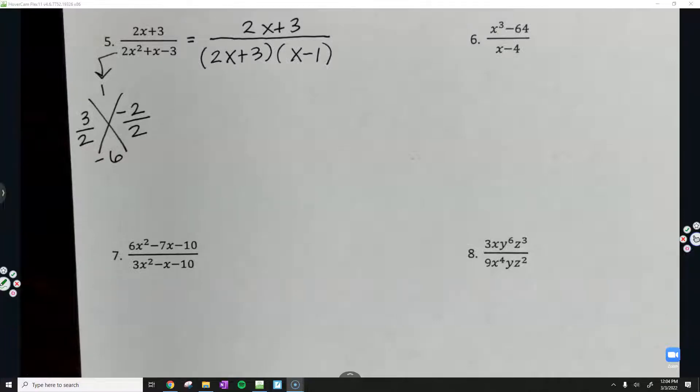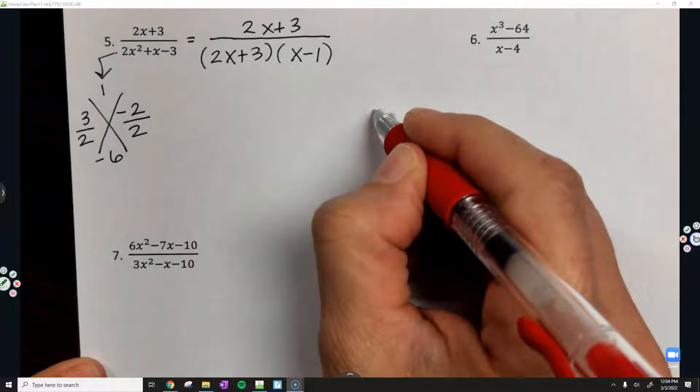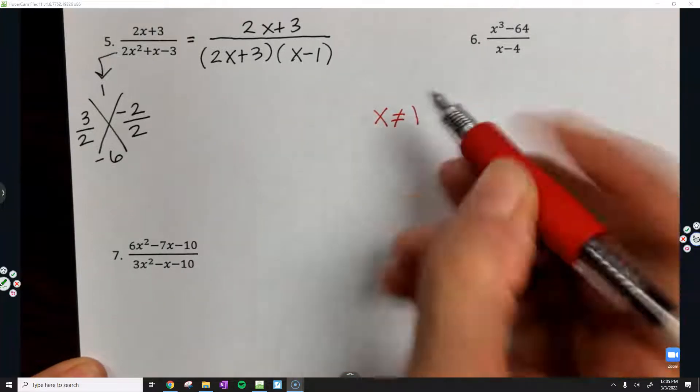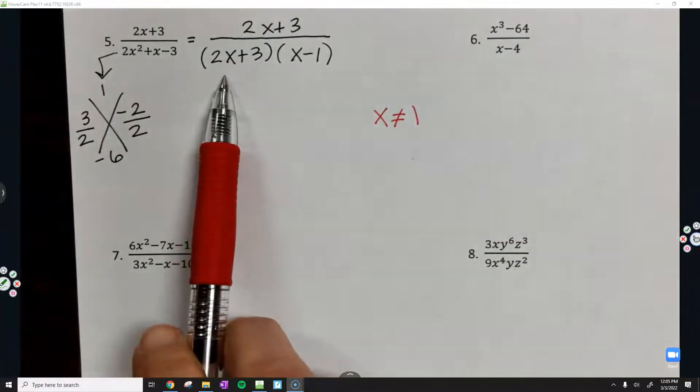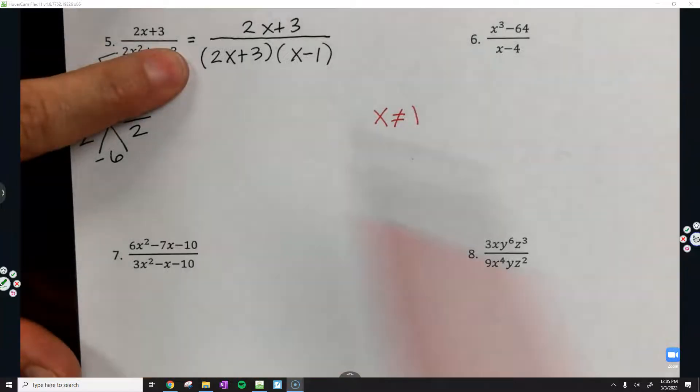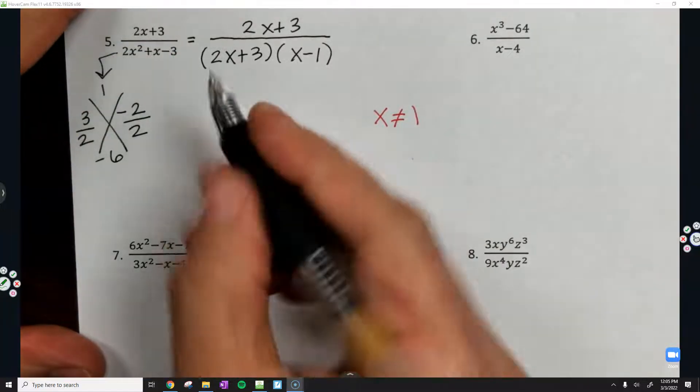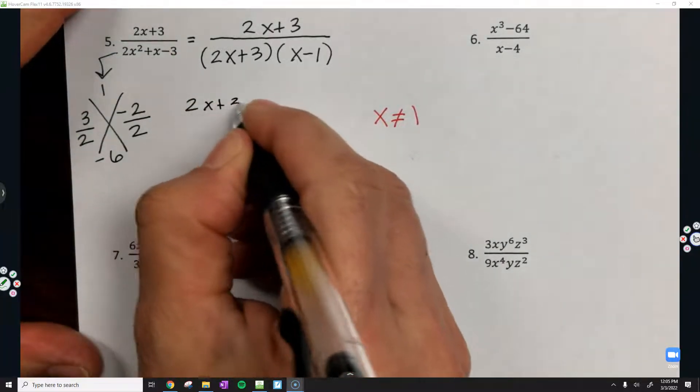Once they're factored, now you can state the restrictions. I know that x cannot equal a positive 1. And then over here, I'll algebraically solve for the restriction for this time. Remember, 2x plus 3 cannot equal 0.